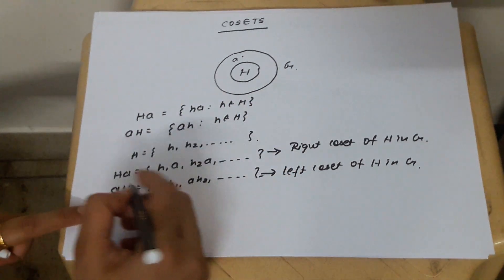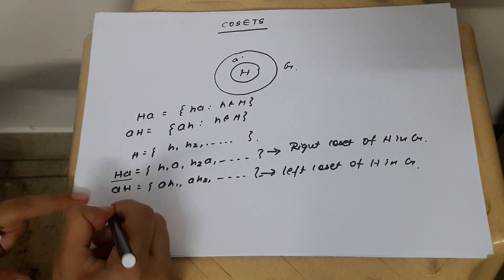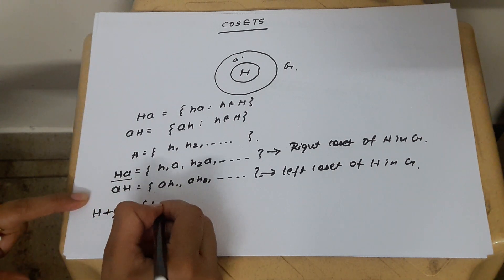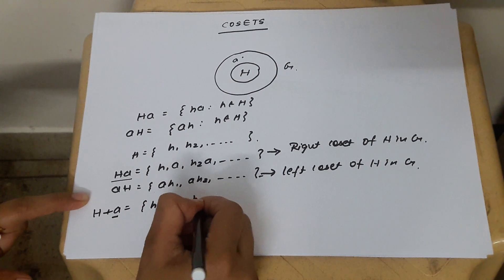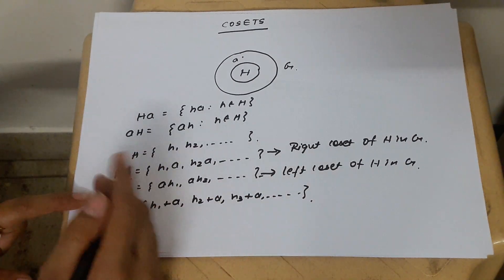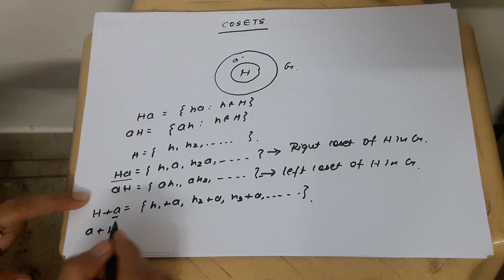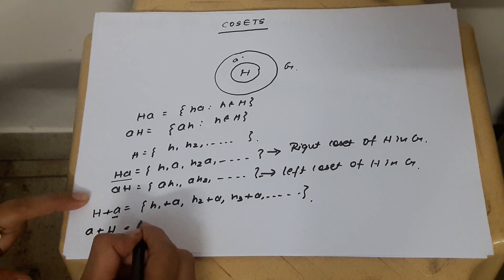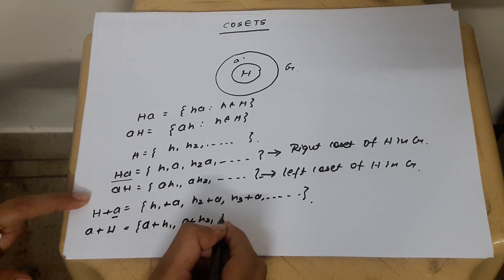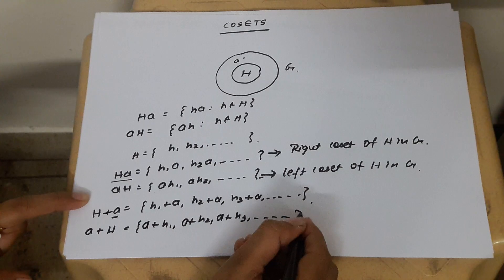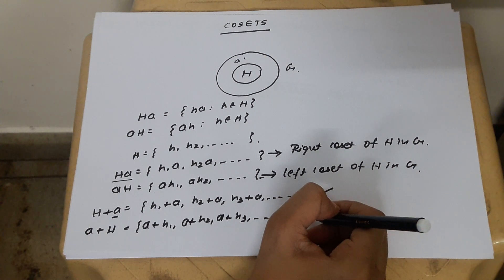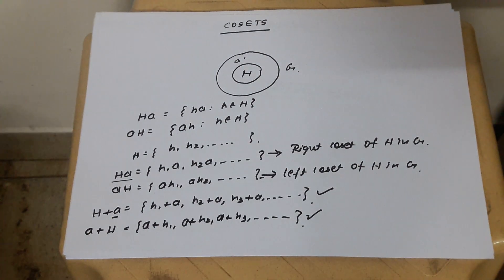But in case you have additive group, then your right coset is denoted by H plus A, where A is getting added to H from right-hand side, and it is something like H1 plus A, H2 plus A, H3 plus A and so on. And for left coset in additive group, you have A is getting added to H from left-hand side, so this is A plus H1, A plus H2, A plus H3 and so on. In case of additive group, this is your right coset and this is your left coset.